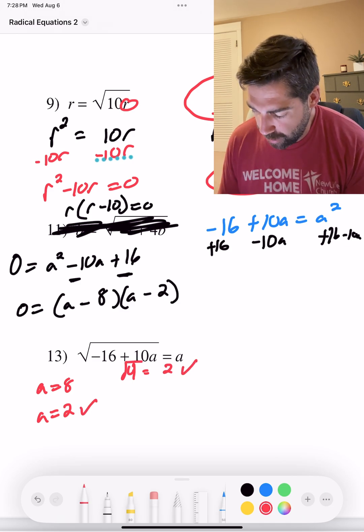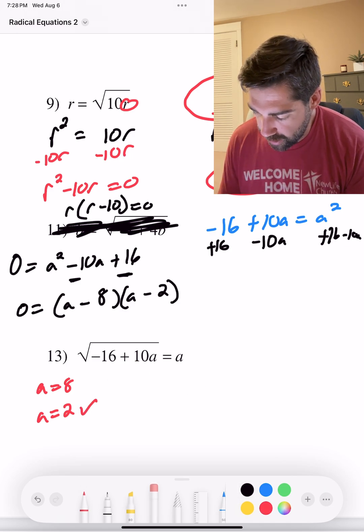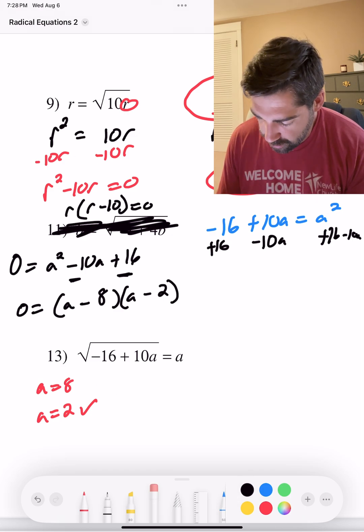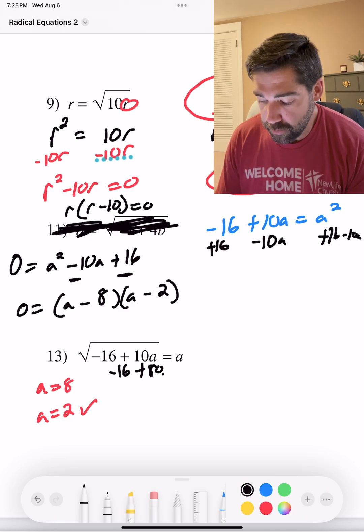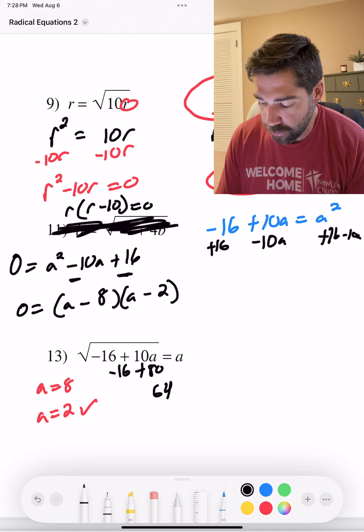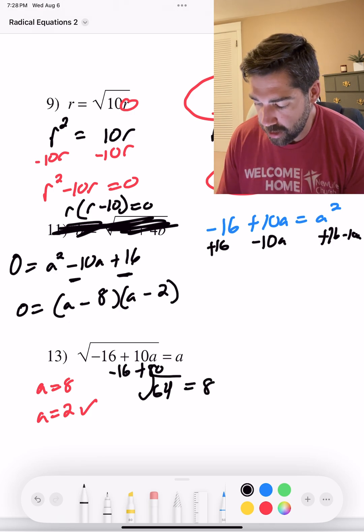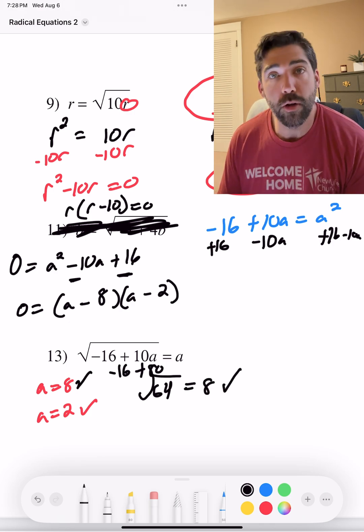How about eight? If we did eight, that would be negative 16. Let's try that again. That would be negative 16 plus 80. That is 54. Is that right? No, 64. Hey, 64. Square root. Does that equal eight? Yes, it does. Check. We got it both.